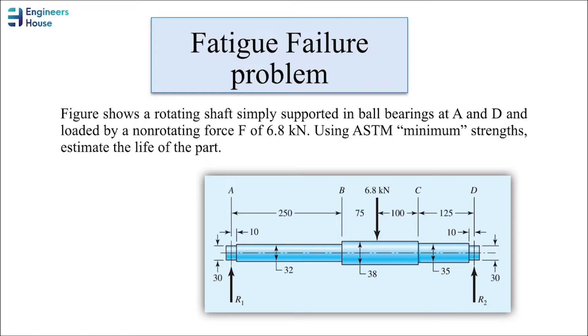In this example, we've got a rotating shaft that is subjected to a constant load equal to 6.8 kilonewtons, with two ball bearings at end A and end D. We are going to estimate the life of this part. By the life of a part, we mean the number of cycles it can bear, so I will write here N.